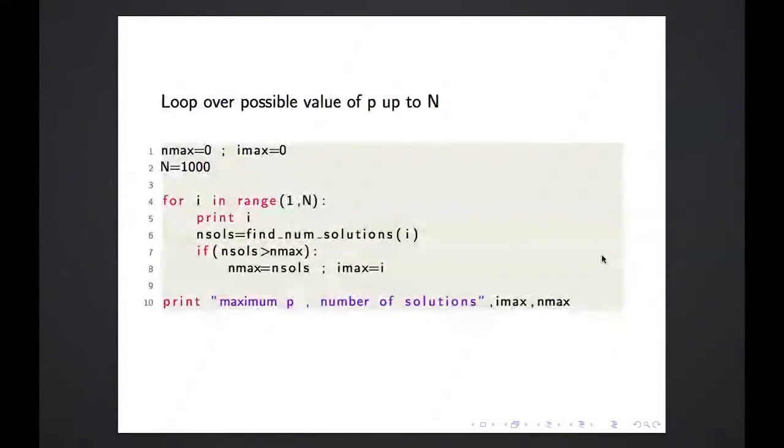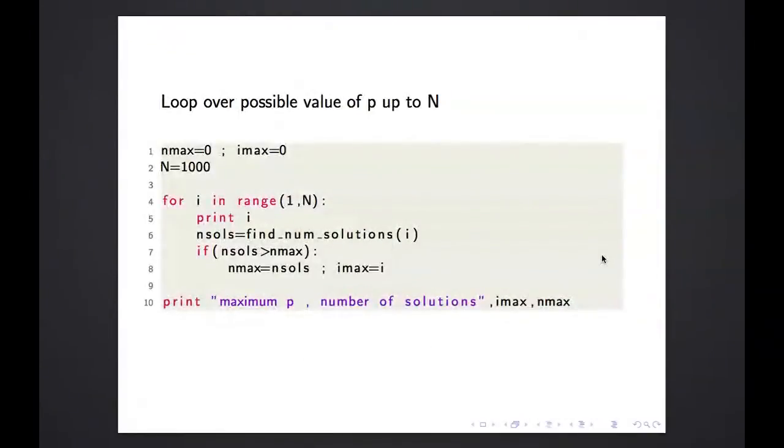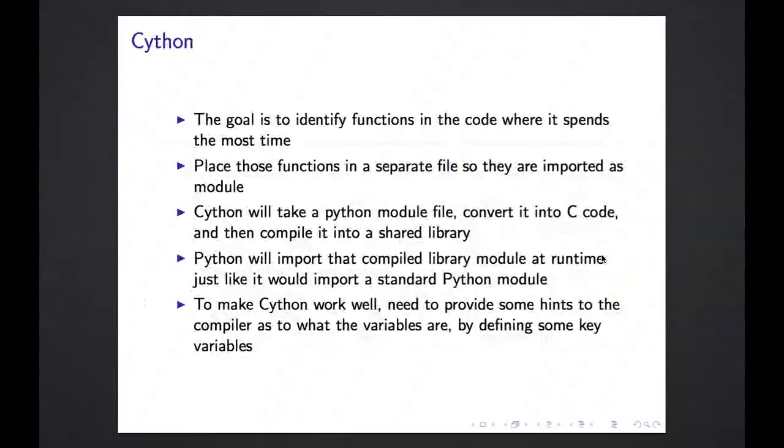So as we can already predict, this is going to be slow, right, because I have explicit loops. So how do I make it faster? The Cython approach is to identify the functions in the code where it spends the most time. Of course, in my code there's only one function, so we know it's going to spend the most time in findNumSolutions. But in the general code, you would identify which functions are really costly in terms of computation. You would then place those functions in a separate file so they are imported as a module into your Python code. And then Cython will take this Python module file, convert it into C code, and compile it into a shared library. This shared library will then be imported by Python at runtime, just like it would import a standard Python module. And to make this work well, we actually need to give Cython some hints as to what the variables are by defining some key variables.